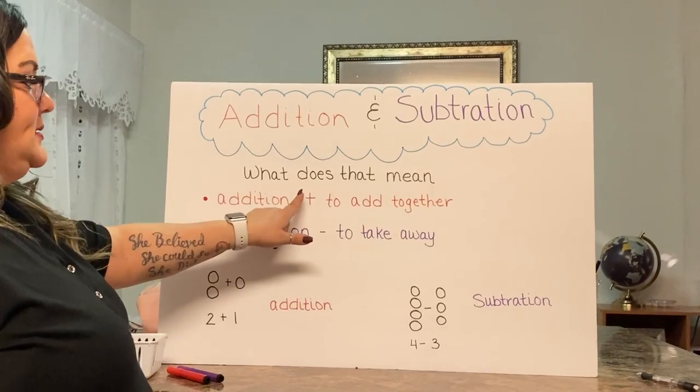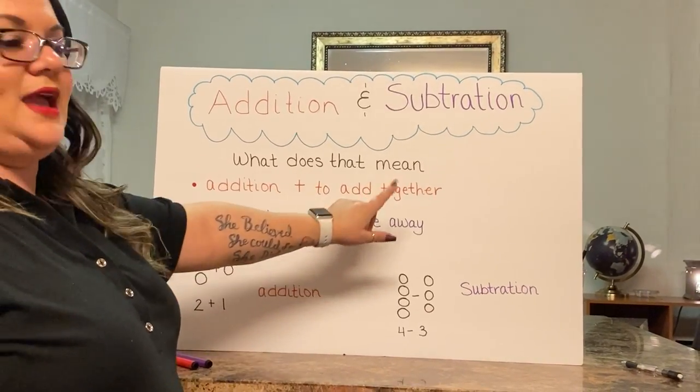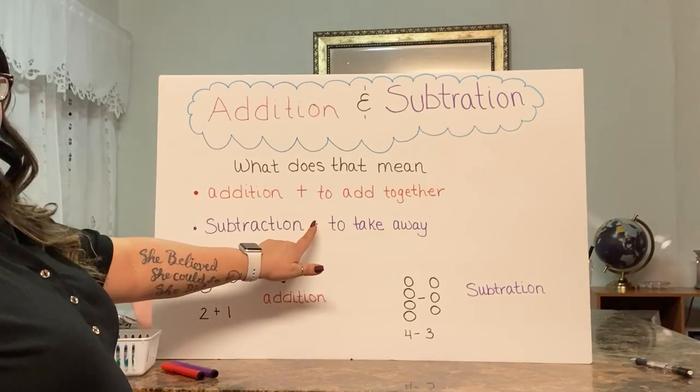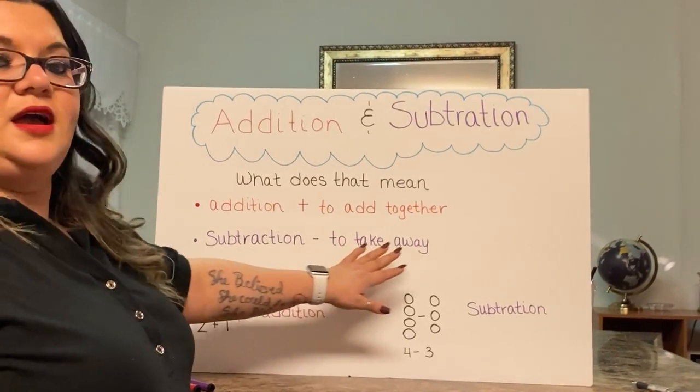Addition, with a plus sign, is to add together. Subtraction, which has a minus sign, is to take away.